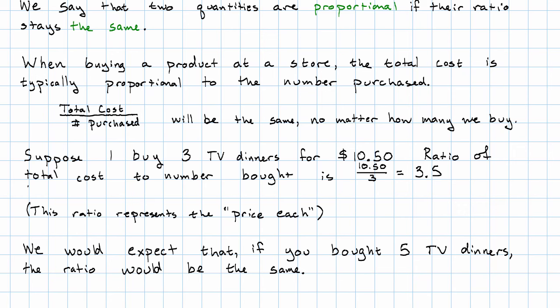We would expect that if you bought five TV dinners, the ratio would be the same. Now I'm going to tell you what we would expect you to pay, and then I'm going to go through how we would find that out. We would expect you to pay $17.50. Why $17.50?